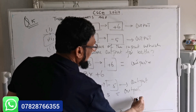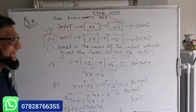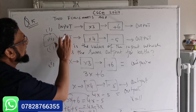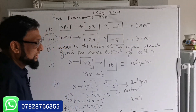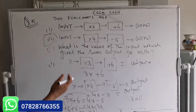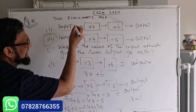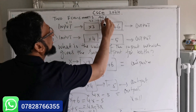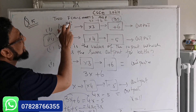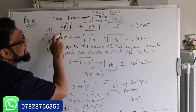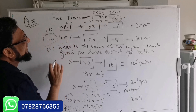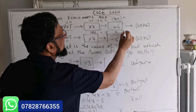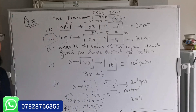So x equals 11, meaning the input is 11. Let's verify: flow chart one — 11 times 3 is 33, and 33 plus 6 is 39. Flow chart two — 11 times 4 is 44, and 44 take away 5 is also 39. Both give the same output of 39, which confirms the answer.